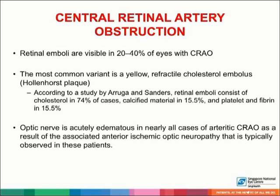Retinal emboli are visible in 20% to 40% of eyes with CRAO. The most common variant is the yellow refractile cholesterol embolus, also known as Hollenhorst plaque. Retinal emboli consist of cholesterol in 74% of cases, calcified material in 15.5%, and platelet and fibrin in 15.5%. Cholesterol emboli typically originate from the carotid arteries in the setting of atherosclerotic disease, but can also arise from the aortic arch, ophthalmic artery, or proximal central retinal artery.